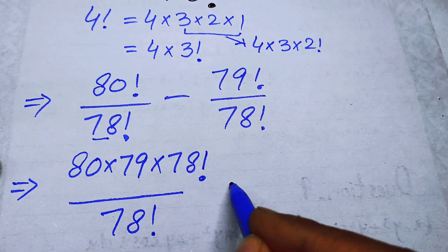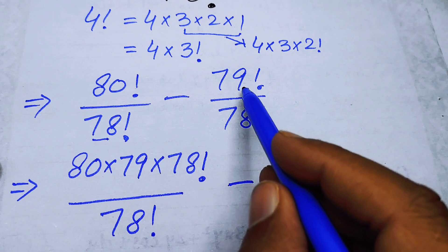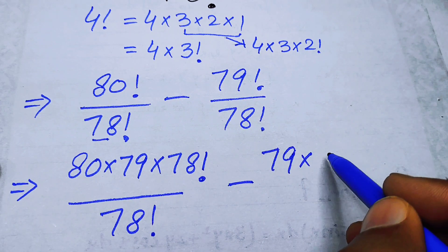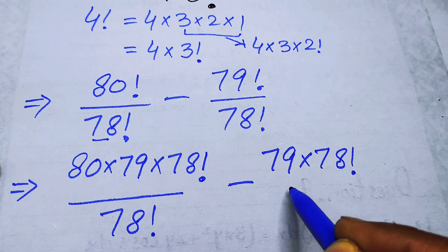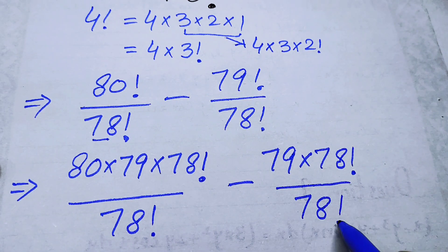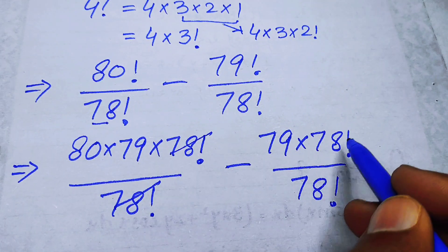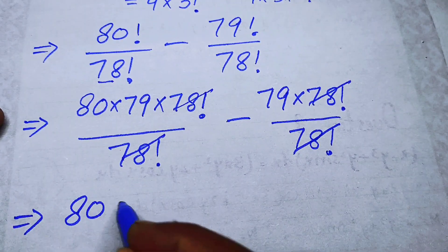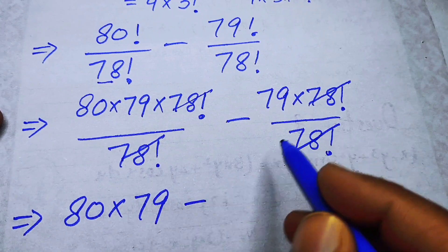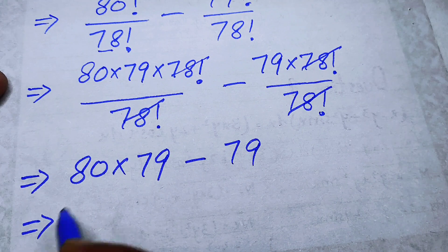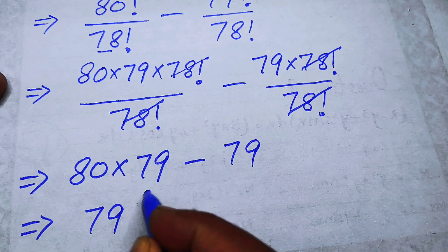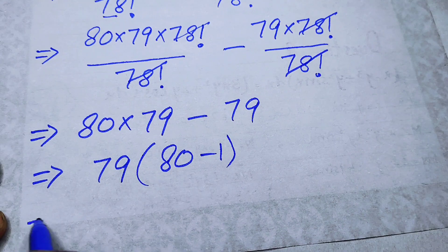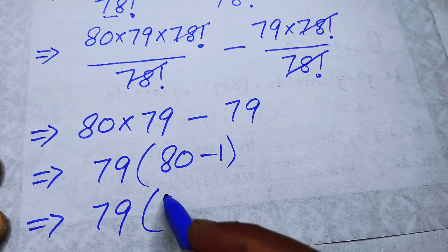Similarly, expanding 79! down to 78 gives 79 × 78! over 78!. Now the 78! factorials cancel in both terms, leaving 80 × 79 − 79. We can factor out 79 to get 79 × (80 − 1).